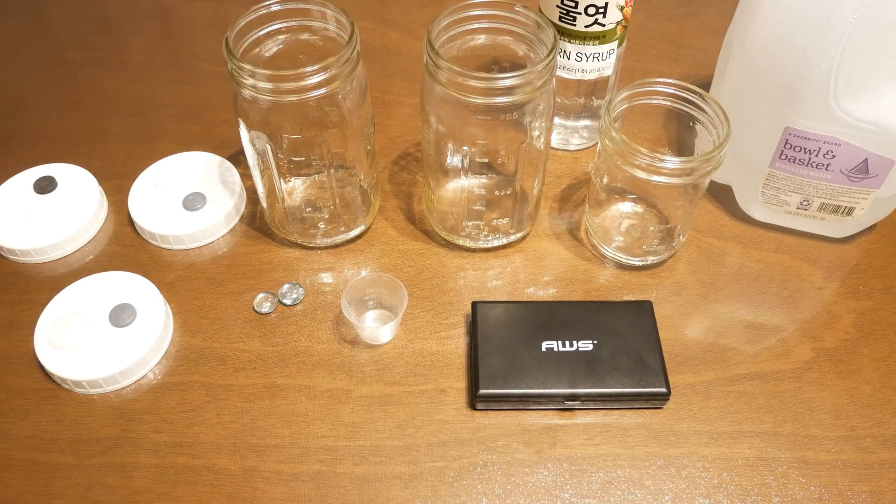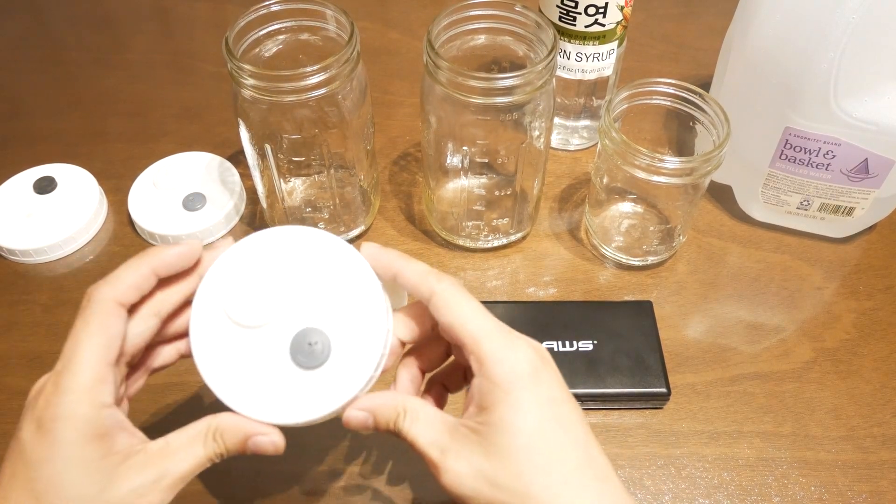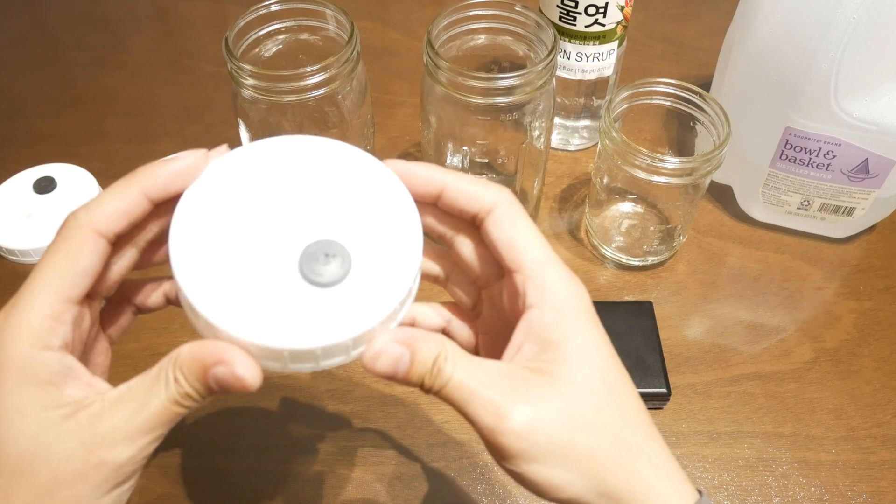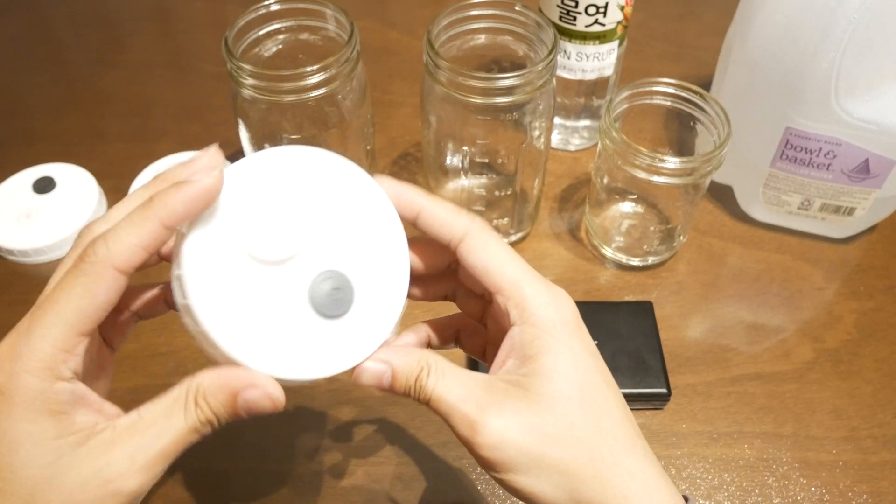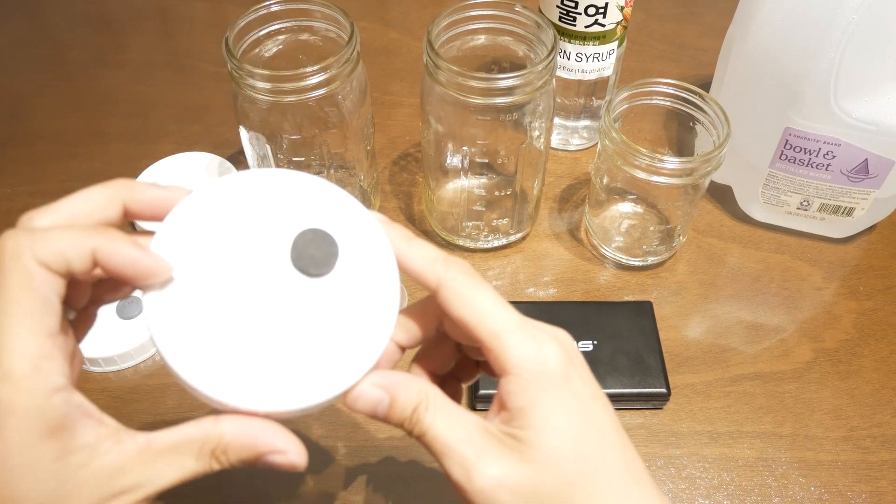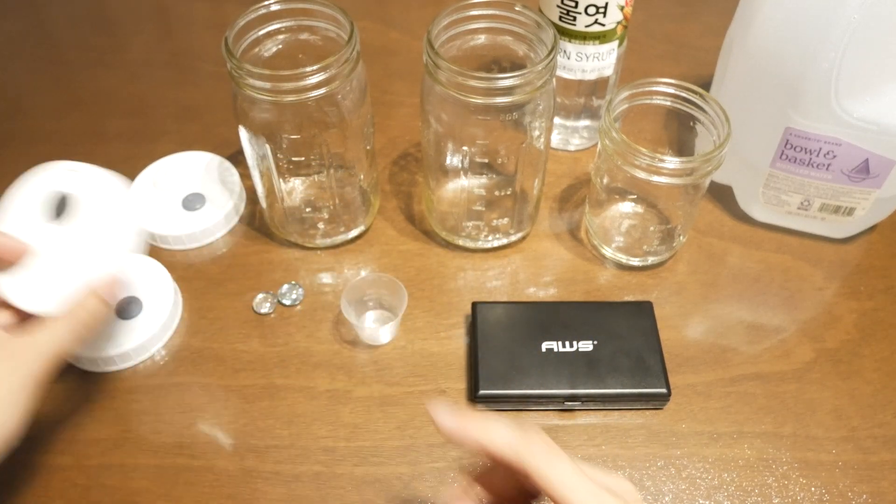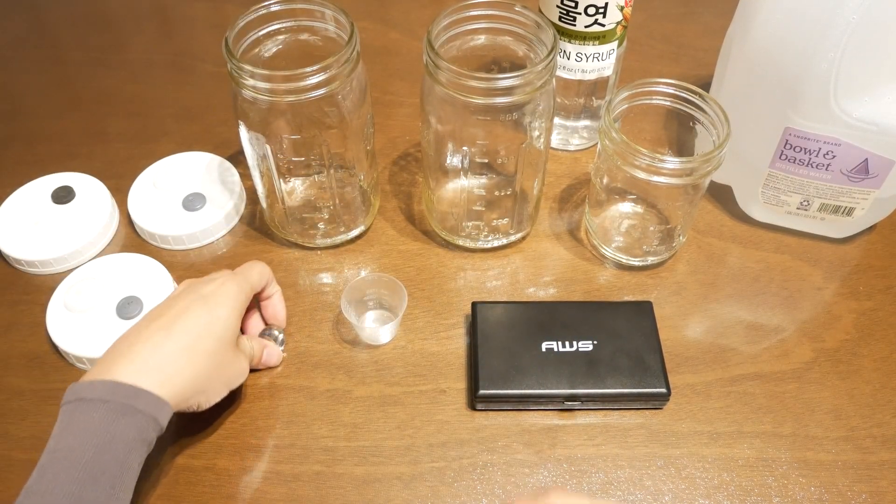Alright so here are the ingredients you're going to need to make your own liquid culture. We're going to need some liquid culture jar lids. If you don't have liquid culture lids you can always order them pre-made online. Or if you want to make your own you can check out my ultimate lid tech video. Liquid culture lids have a self-healing injection port and an air port for gas exchange. I'll have links to everything in the description below for you guys.